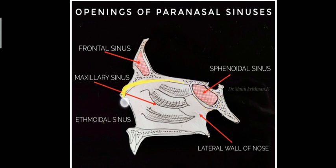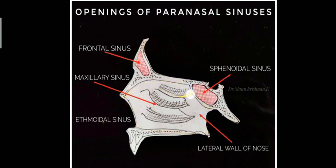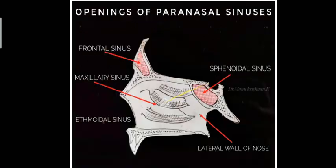Here is the lateral wall of the nose where all the sinuses open. These bony shelf-like projections are called conchae — the superior, middle, and inferior conchae. The space lying just beneath each of them is the superior meatus, middle meatus, and the inferior meatus.